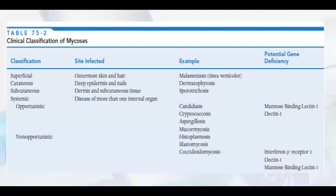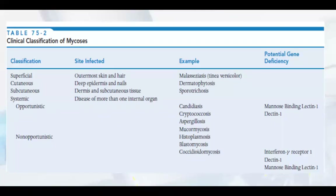You can see the clinical classification of mycosis: superficial infections affecting the outermost skin (example: malassezia); cutaneous infections in the deep epidermis and nails; subcutaneous infections in the dermis and subcutaneous tissues; systemic disease of more than one internal organ; and opportunistic infections including candidiasis, cryptococcosis, aspergillosis, mucormycosis, histoplasmosis, blastomycosis, and coccidioidomycosis.